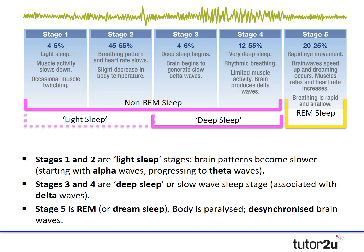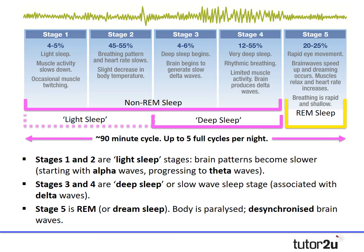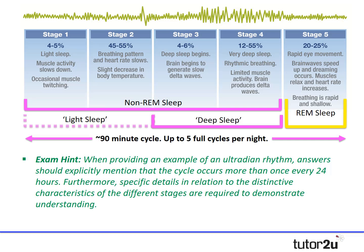On average, the entire cycle repeats every 90 minutes and a person might experience up to 5 full cycles per night. An important exam hint here: examiners note that when providing an example of an ultradian rhythm, answers need to explicitly mention that the cycle occurs more than once every 24 hours. Furthermore, specific details in relation to the distinctive characteristics of the different stages — in this case of sleep — are required to demonstrate understanding, and we'll come on to that in part 2 of the video.